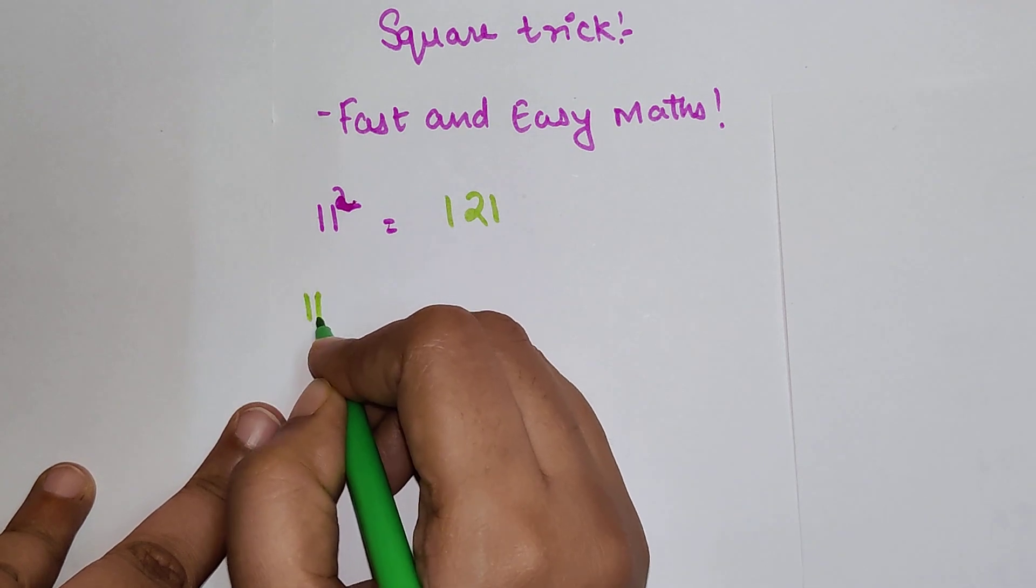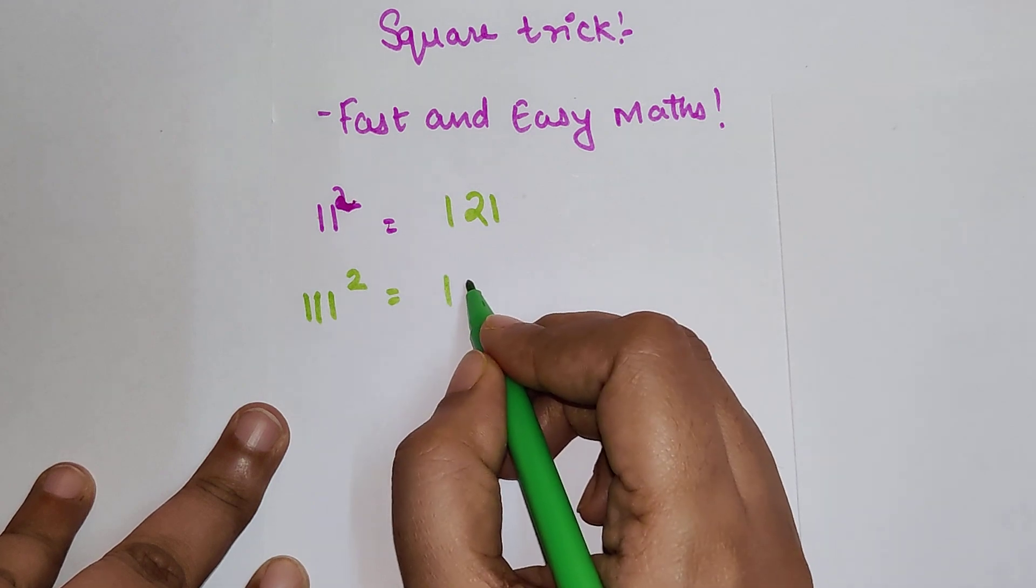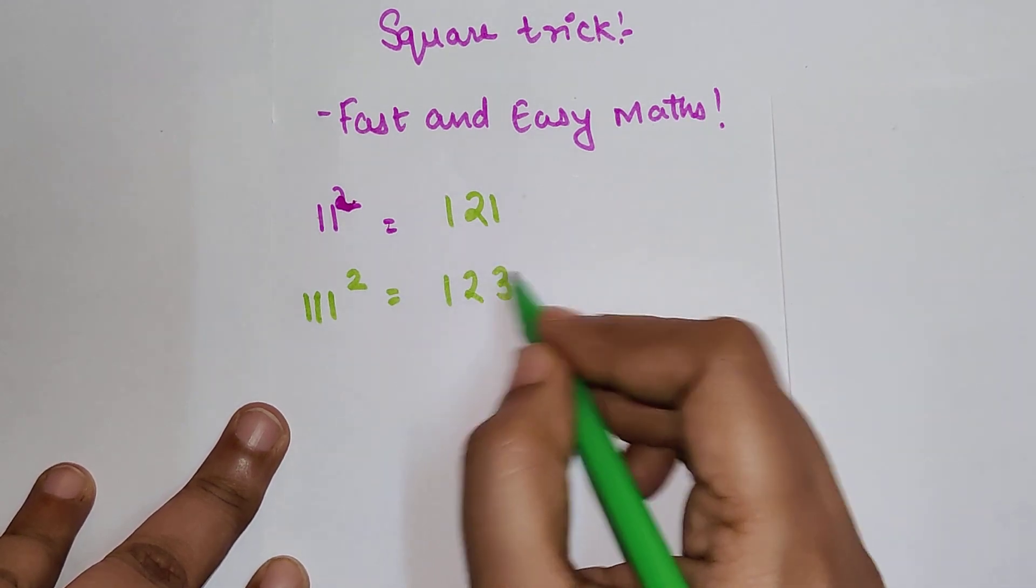Now what about 111 squared? How many digits are there? Three, right? So we go up to 1, 2, 3 and then go back.